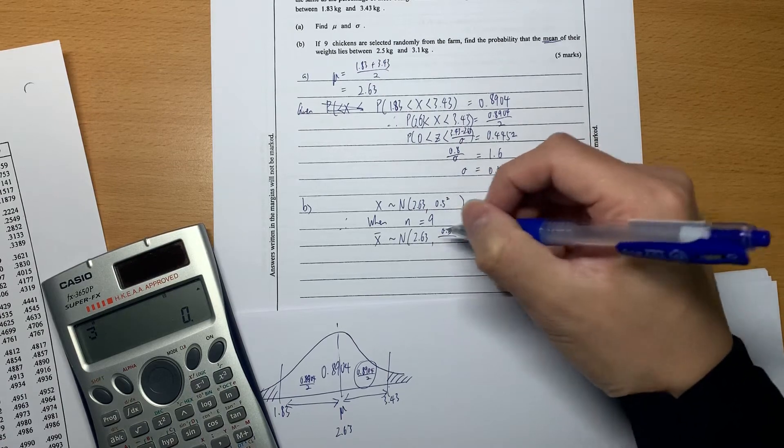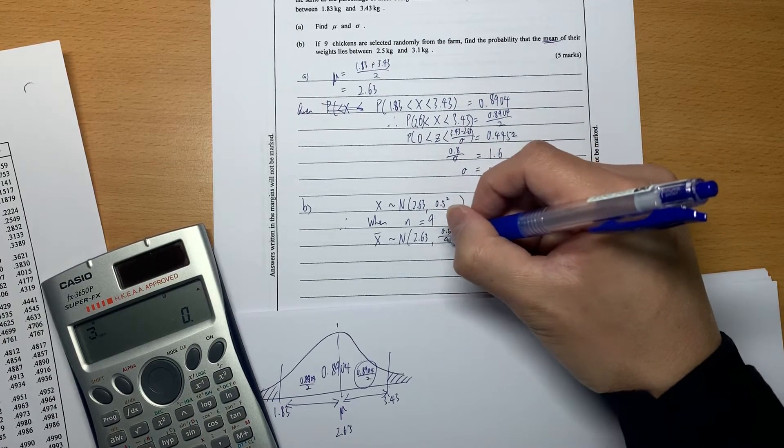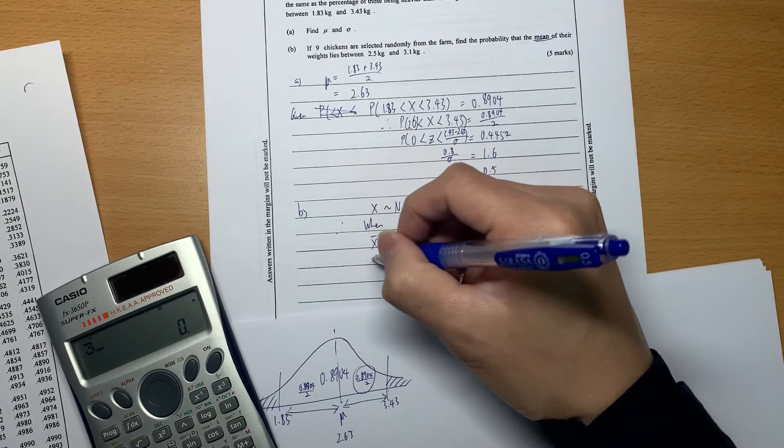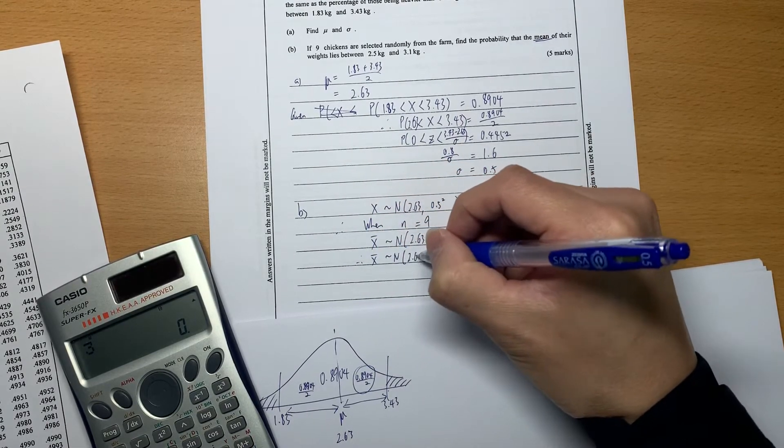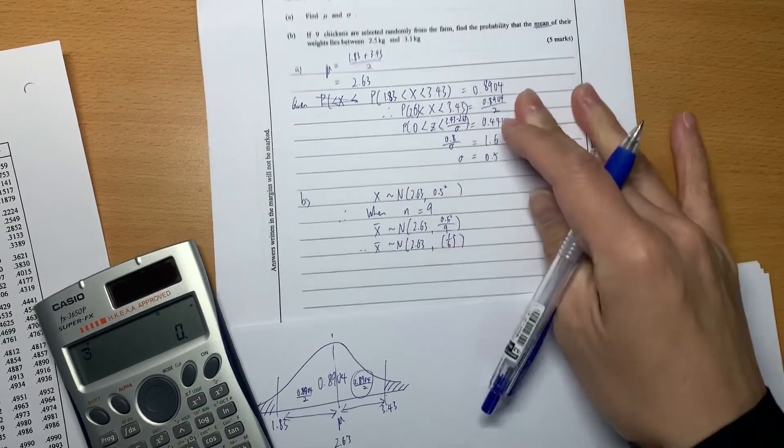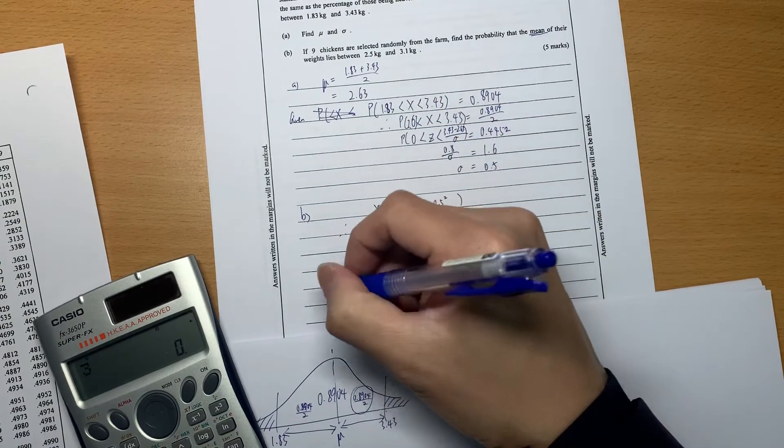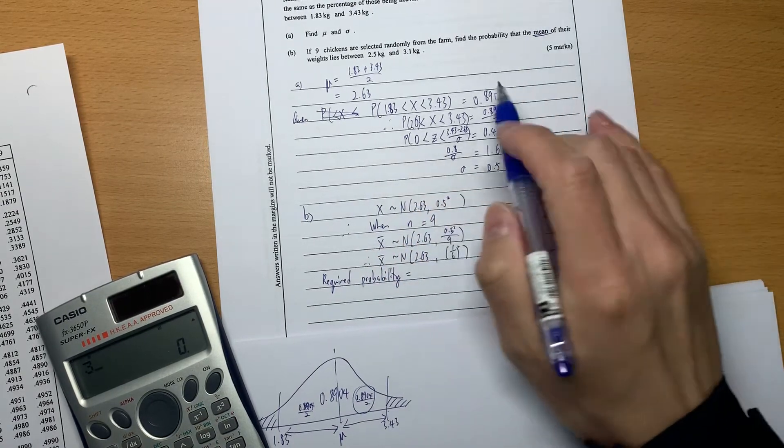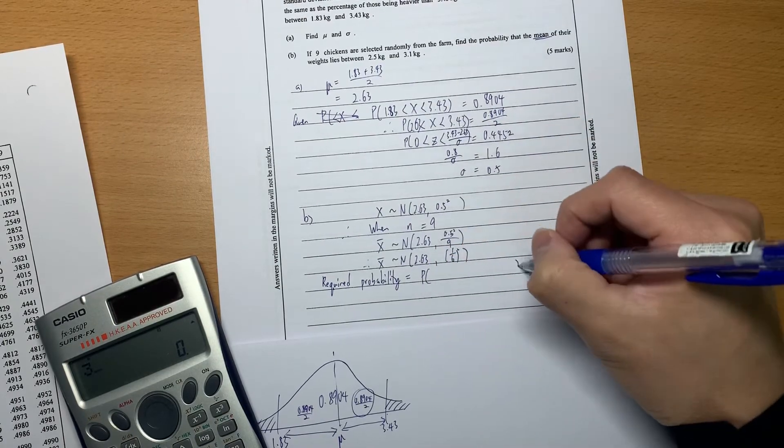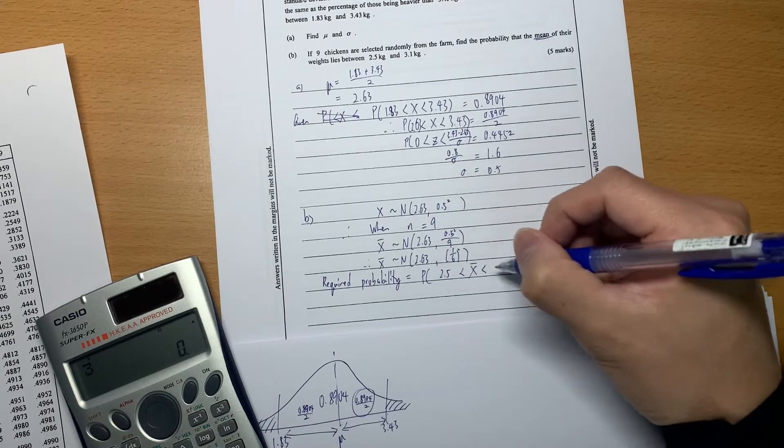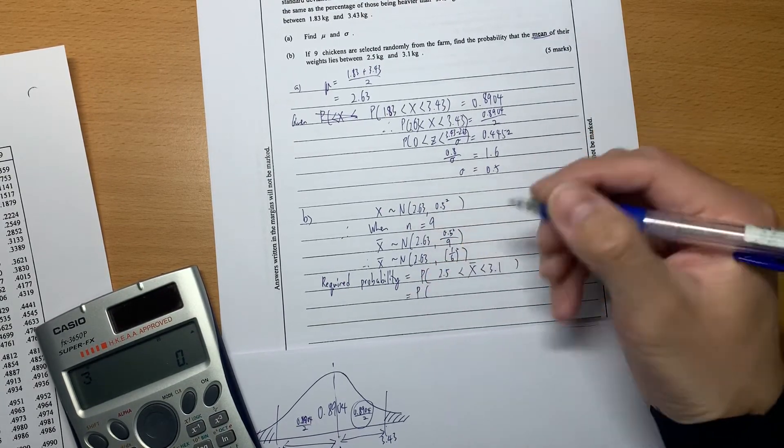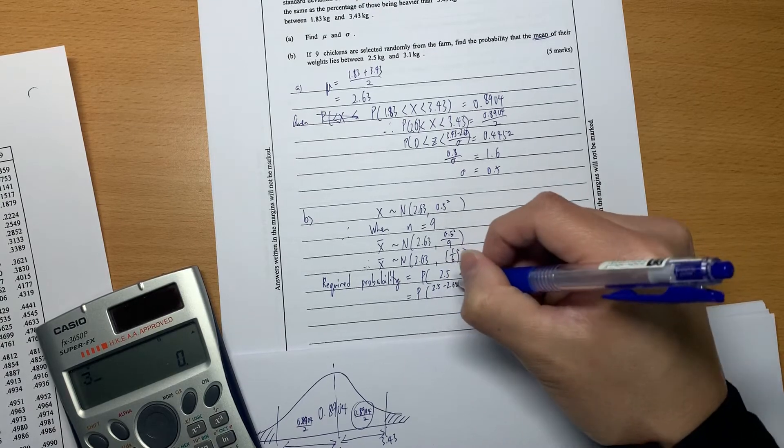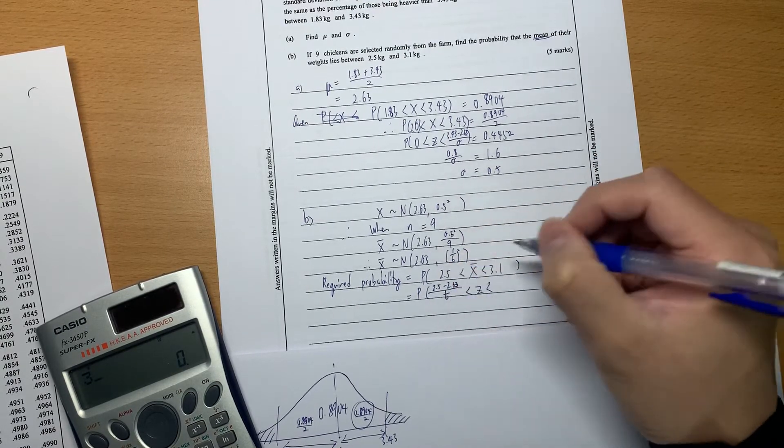The mean standard deviation - the variance should be the same variance divided by the sample size. X-bar is 2.63 and this is 1 over 6 squared. The required probability is when X-bar is between 2.5 and 3.1. We change it to standard score first, divided by standard deviation 1 over 6 here.